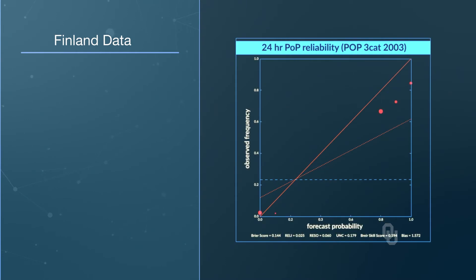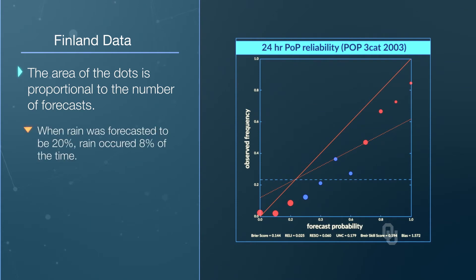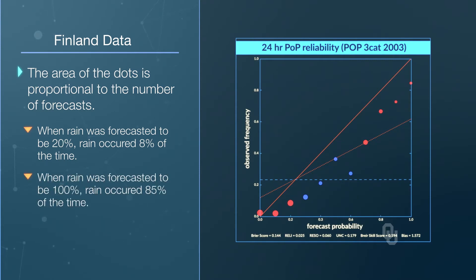Here is some data from Finland. The area of the dots is proportional to the number of forecasts. On days when rain probability was forecasted to be 20%, rain occurred about 8% of the time. On days when the forecast was 100%, rain occurred 85% of the time.